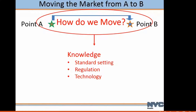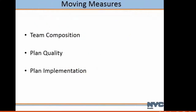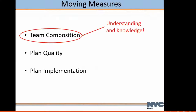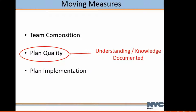In moving from point A to point B, that team composition is your understanding and knowledge — we're trying to get that knowledge out. With our cooling tower regs, we require that you have a team: people who not only know how to manage Legionella but also know the building system, and even more importantly, know the people working in the building and how they work — that management component. You take that knowledge and put it into a plan, and plan quality is the documentation of all that knowledge. Everybody on the team needs to look at their plan, understand it, and know their roles and responsibilities.